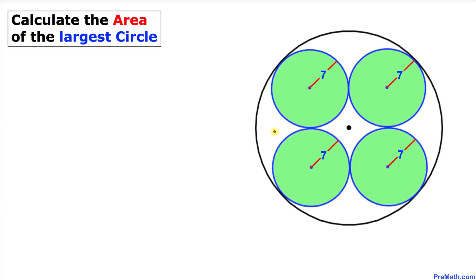Welcome to pre-math. In this video tutorial we have four identical green circles inscribed inside a bigger circle, as you can see in this figure. Moreover, these circles are tangent to each other, and the radius of each green circle is 7. We are going to calculate the area of the larger circle.